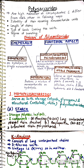Alpha amylose constitutes 15 to 20 percent of total starch. It is a long, unbranched chain — there is no branching point, making it a straight-chain structure. Amylopectin constitutes 80 to 85 percent of starch and is a branched-chain polysaccharide, where branches come out from the parent chain.